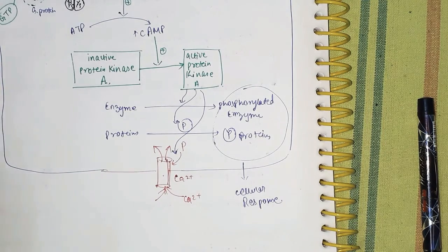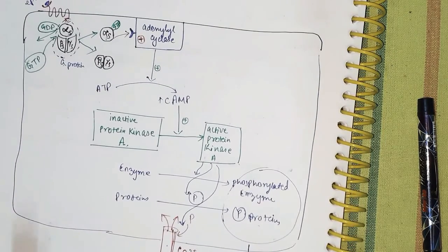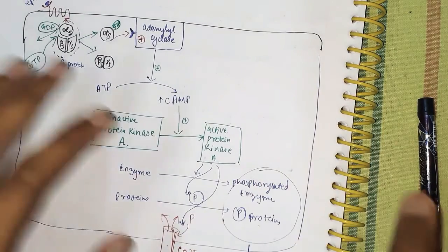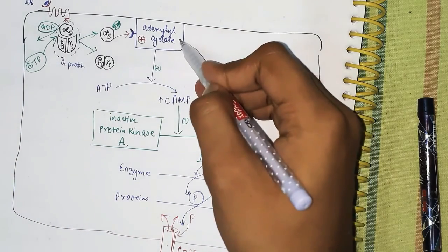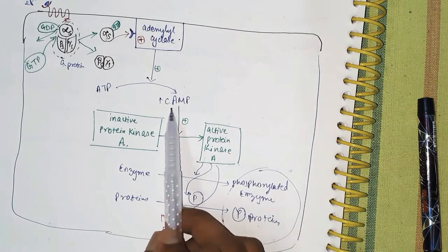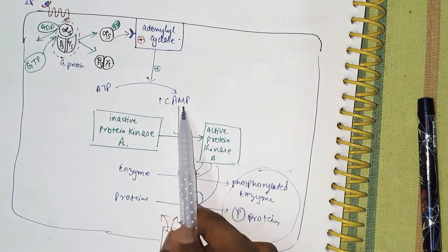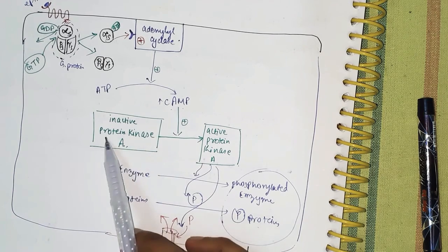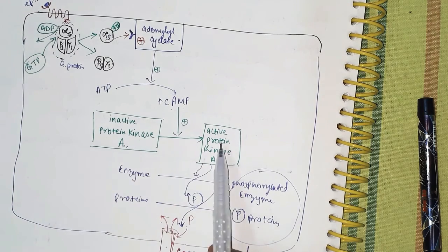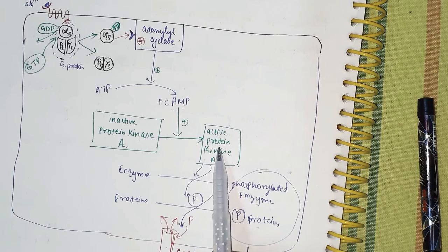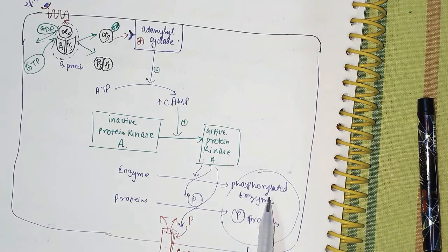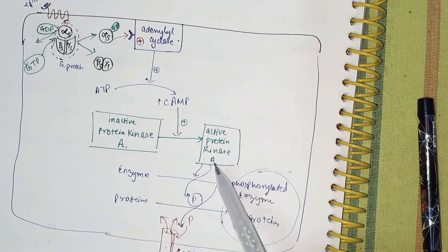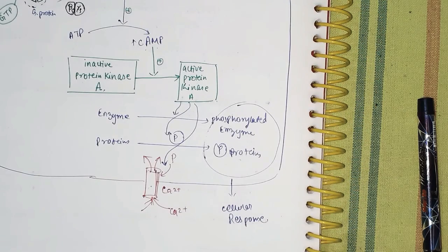So in summary, the G protein helps stimulate adenylyl cyclase, which activates cyclic AMP, which in turn activates inactive protein kinase A into active protein kinase A. This active protein kinase A helps in phosphorylation of enzymes, proteins, and ion channels, bringing about the overall cellular response.